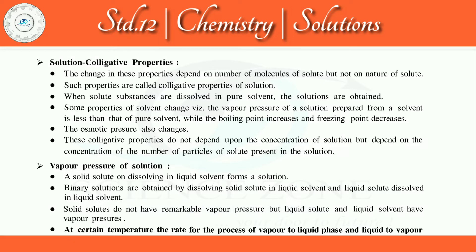There are four colligative properties. First is change in vapor pressure — the vapor pressure of the solution is different from that of the pure solvent. Second is increase in boiling point, also known as elevation of boiling point. Third is decrease in freezing point, also known as depression of freezing point. And the fourth property we will study is osmotic pressure. Let's start with the first property.